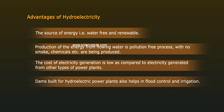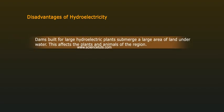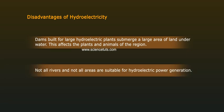Dams built for hydroelectric power plants also help in flood control and irrigation. Disadvantages of Hydroelectricity: Dams built for large hydroelectric plants submerge a large area of land under water, which affects the plants and animals of the region. Not all rivers and not all areas are suitable for hydroelectric power generation.